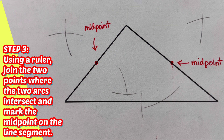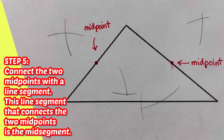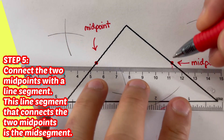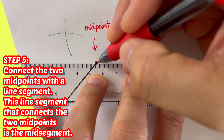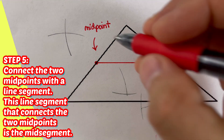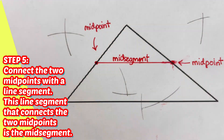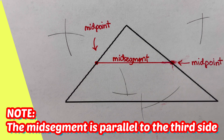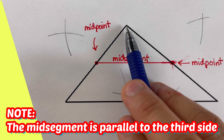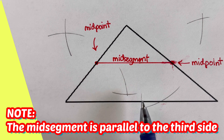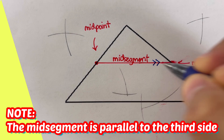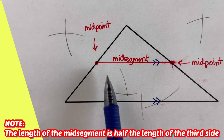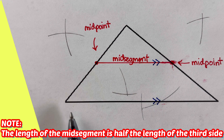Now for step five: connect the two midpoints, and this will be our mid-segment. So I'm going to connect these two dots together — and this is our mid-segment. Please remember that this mid-segment is parallel to the third side, the side that we didn't use. This arrowhead tells us that they are both parallel. And at the same time, the length of the mid-segment is half the length of the third side.